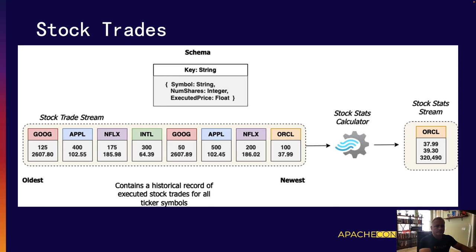Next is the stock trades dataset, which is a stock trade stream. Stock trades are fed into the system as a continuous stream, and each record represents the actual trading of shares between accounts. A traditional stream processor consumes these records and uses that information to update records in a stock statistics stream. The trade data cannot be treated as a changelog because each record represents a unique transaction — Google was traded at different prices and different numbers of shares. So it doesn't make sense to use a Table View directly here; instead we use a stock stats calculator.